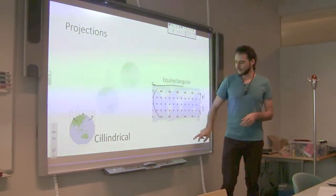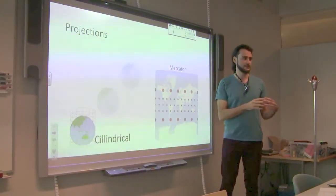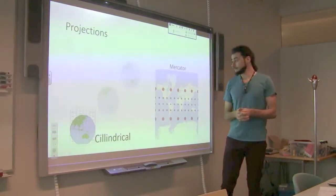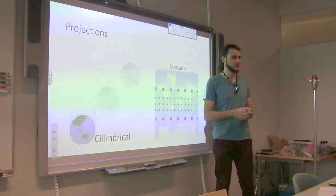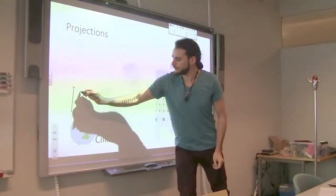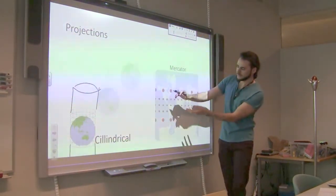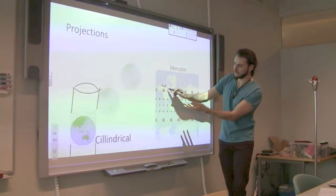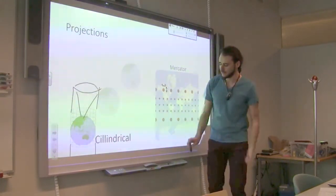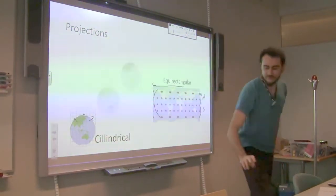It's not the most common map you see out there. The most common map is called the Mercator projection, which is exactly what is used in OpenStreetMap, Google Maps, Apple Maps, and any of these modern map services, which we will study tomorrow. What happens here is that this cylinder is a little bit taller than the Earth, so you can compensate the horizontal stretching with some vertical stretching as well. You can see that these circles are actually circles now, while in the equirectangular projection they were oval shaped.